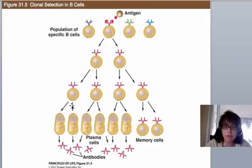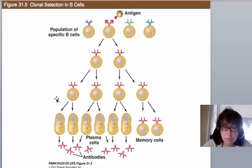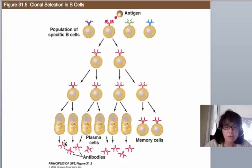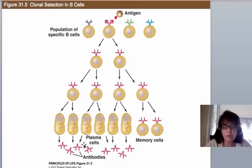The other B cells differentiate into plasma cells, which are basically antibody factories. They're still B cells, but their job is to secrete antibodies. The antibody that was tethered in the membrane as a transmembrane receptor undergoes mRNA splicing to make a different tail. The first antibody released is actually IgM, which is a pentamer of five antibody molecules hooked together. Plasma cells then start secreting antibodies and you begin fighting off the infection.